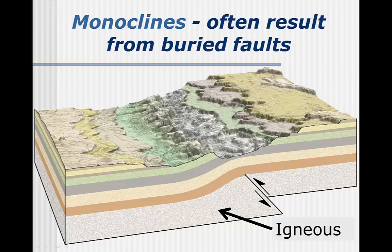The simplest kind of fold is a monocline, and can be thought of as a fold with only one limb. This is a case where rock type is more important than the other factors that determine whether deformation is ductile or brittle. Even though the igneous rock below the layered sedimentary rock is hotter and under more confining pressure, it broke from compressional stress, while the rocks on top only bent from that stress.